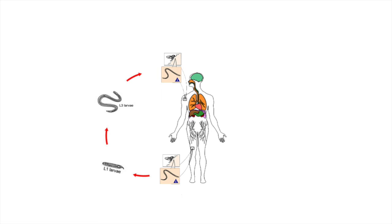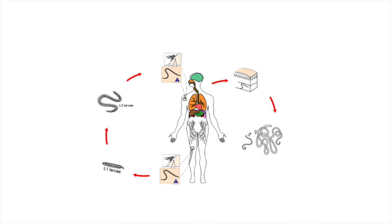The blackfly then travels to another human to take another blood meal and passes the larva into the human host's blood. The larva then travel into the subcutaneous tissue and molt twice, forming nodules as they mature into adult worms — this takes from six to twelve months. After maturation, the adult worms mate to produce 700 to 1,500 microfilaria per day. These microfilaria migrate to the skin during the day, where they can get ingested by the female blackfly. Once ingested, the cycle can then restart.